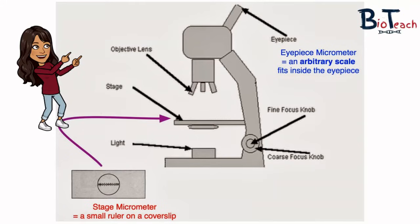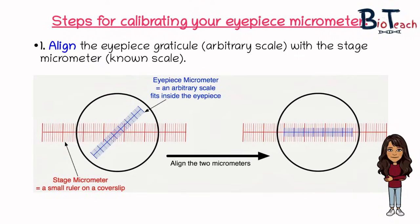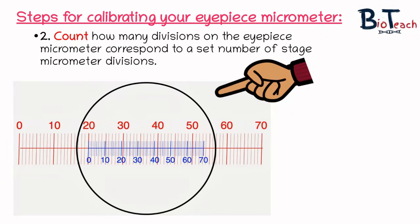This image shows the microscope with the eyepiece location and an example of the stage micrometer. There are various steps you have to complete to calibrate your eyepiece graticule. The first step is to align the eyepiece graticule with the stage micrometer. Once they're on top of each other, you need to count how many divisions on the eyepiece graticule correspond to a set of stage micrometer divisions. You could rotate the eyepiece a little to remind yourself which is which when looking down the microscope.